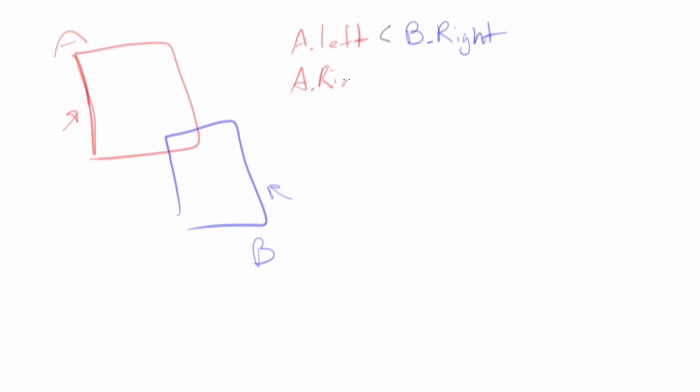A dot right is greater than B dot left. So here we test to see each side, the left of A and the right of A. A right is here. B left is here. So A right is greater than B's left. So those two conditions are now true.